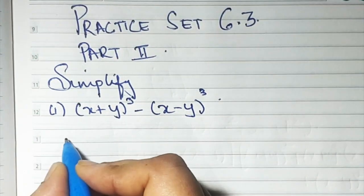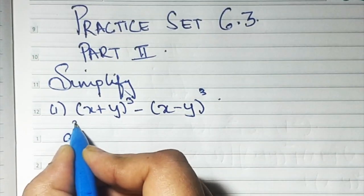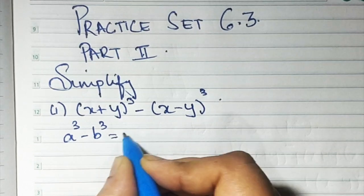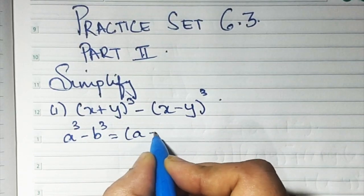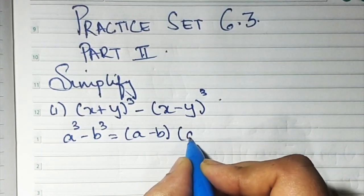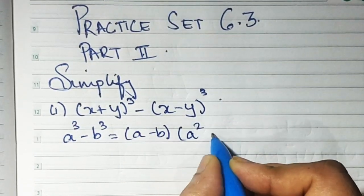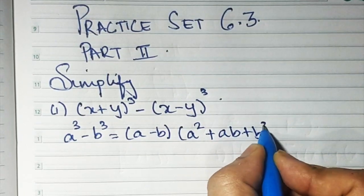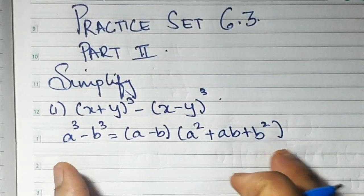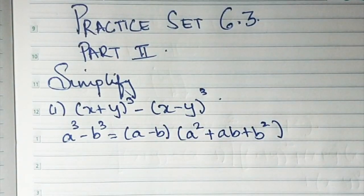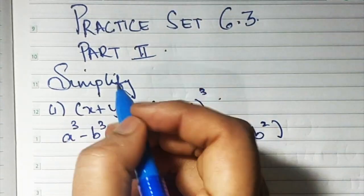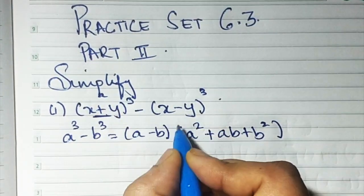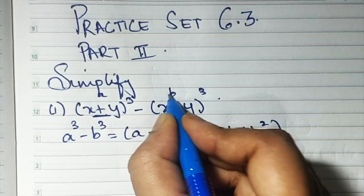The formula that we are going to use here is a cube minus b cube equals a minus b, times a square plus ab plus b square. We have used this formula for part 1 also. So now our a is (x + y) and our b is (x - y).